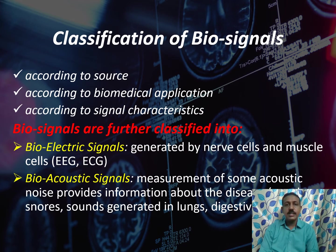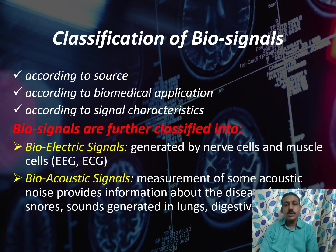Next, we shall see about the classification of biosignals. Biosignals are classified according to source, according to biomedical application, and according to signal characteristics. Biosignals are also further classified into bioelectric signals. These signals are generated from nerve cells and muscle cells — signals such as EEG, ECG, etc.